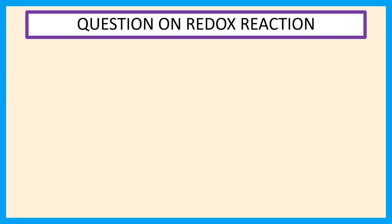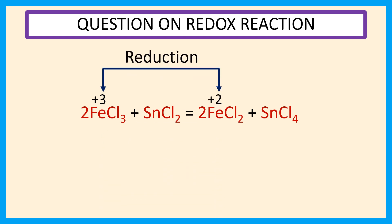Given reaction is 2FeCl3 plus SnCl2 equals 2FeCl2 plus SnCl4. In this reaction, oxidation number of Fe in FeCl3 is plus 3, and oxidation number of Fe in FeCl2 is plus 2. So this is reduction.